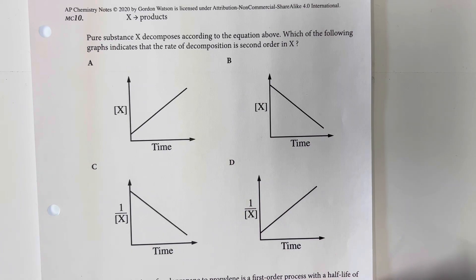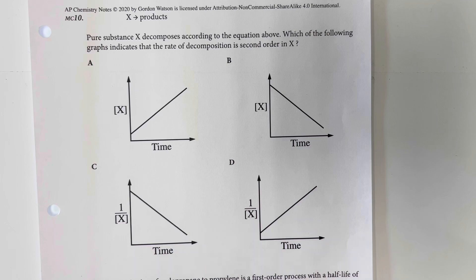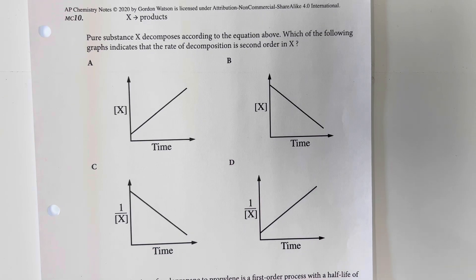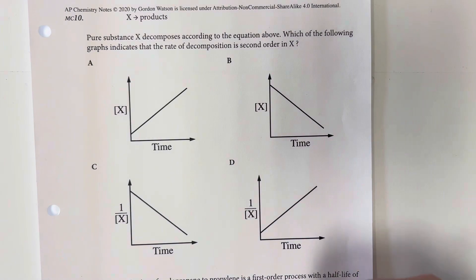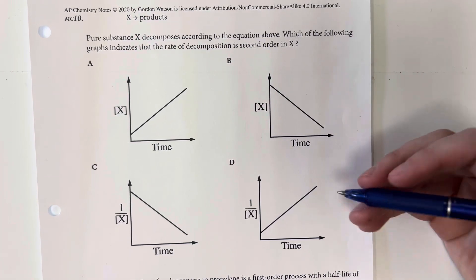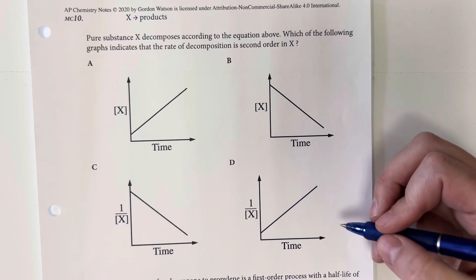X goes to products. Pure substance X decomposes according to the equation above. Which of the following graphs indicates the rate of decomposition in a second order X? The rate of decomposition for second order is going to be the slope, and we need one over the concentration for our slope for second order.